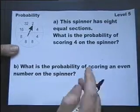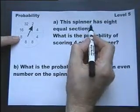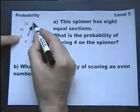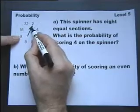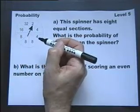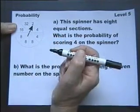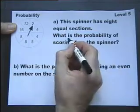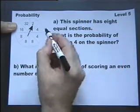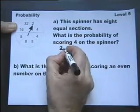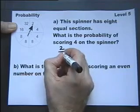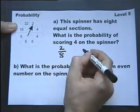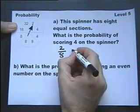Probability. This spinner has 8 equal sections, so these sections are all the same size, therefore the spinner is just as likely to land on any one of them. What is the probability of scoring a 4? Well, there are two sections out of the eight sections, therefore 2 over 8, always write as a fraction, is the answer. If we can cancel a probability, we should cancel it.